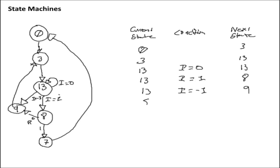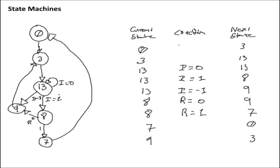Then for state eight: we have two paths based on the condition of r. If r is equal to zero, we transition to state nine. If r is equal to one, we transition to state seven. Simply by building a transition table like this, we can translate it into a lookup table. I would recommend a PLA because there are situations where certain inputs won't be considered, and that flexibility is very helpful. But we can translate this into a lookup table connected to a register — and that's our state machine.